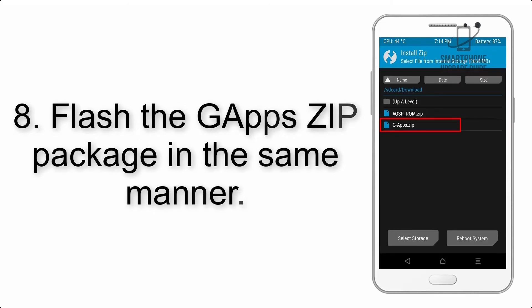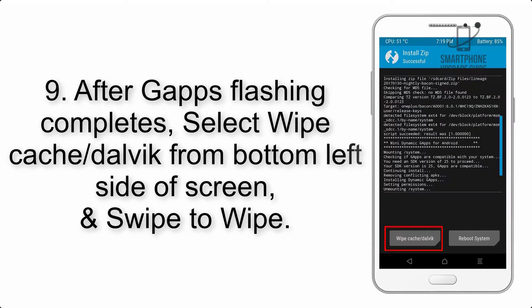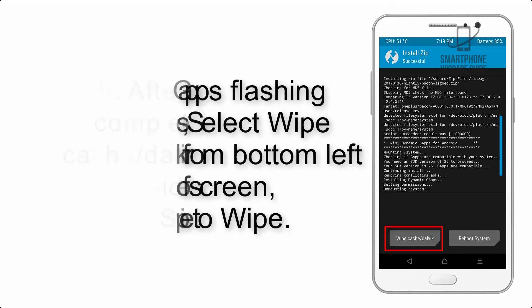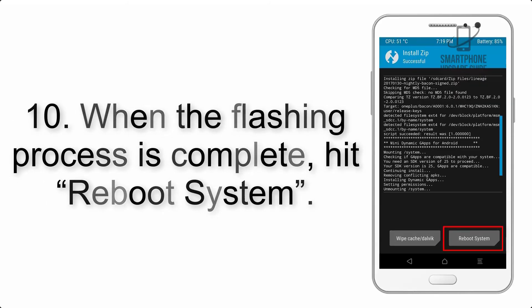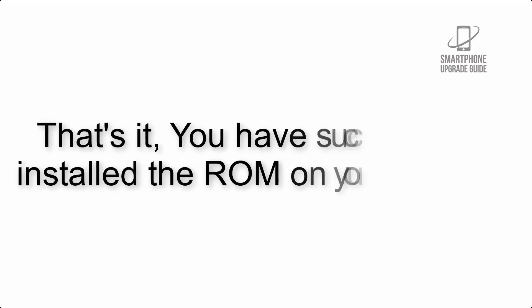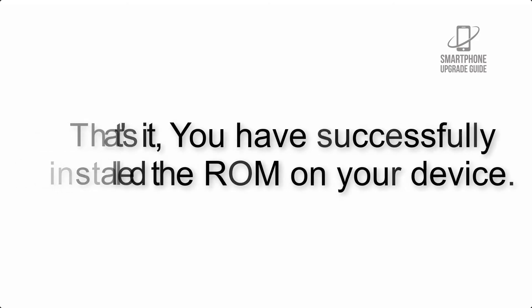Step 8: Flash the GApps zip package in the same manner. Step 9: After GApps flashing completes, select Wipe Cache and Dalvik from the bottom left side of the screen and swipe to wipe. Step 10: When the flashing process is complete, hit Reboot System. That's it — you have successfully installed the ROM on your device.